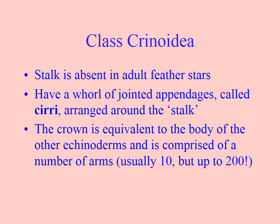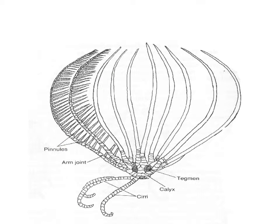As we said, the sea lilies have a stalk and the feather stars don't. They have this crown, which has anywhere from 10 to 200 arms. It's very similar to a feeding basket star, but these appendages — these arms — are actually jointed appendages. They also have these other jointed appendages called cirri, a separate group of arms that face the other way around the central part of the body, the calyx, and that is for grasping the substrate. The feather stars can walk around on these jointed cirri appendages.